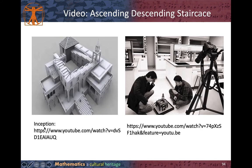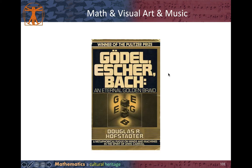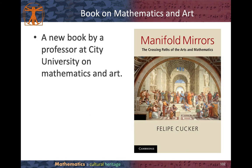The concept of impossible looping also appears in the movie Inception. Two of my former colleagues tried to recreate this picture in real life as well. A BBC video talks about the mathematical art of MC Escher — the links for all these videos are already uploaded. There is also a very good book called Gödel, Escher, and Bach, which connects Gödel the mathematician, Escher the artist, and Bach the musician. Another book was written by a professor at City University on mathematics and art.